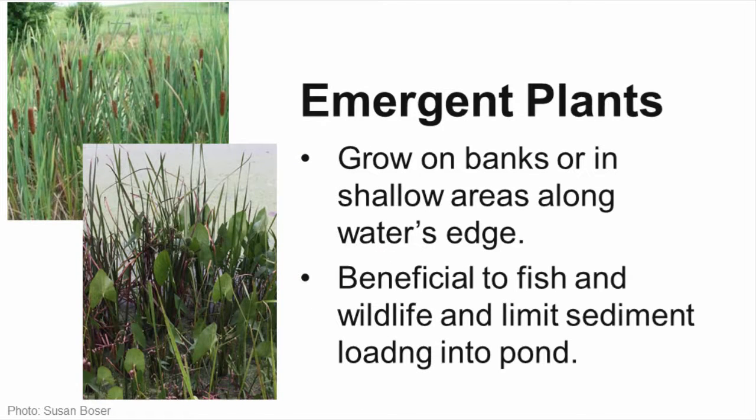Emergent plants are those that can be found on the banks or shallow areas of the pond and grow in the water or right along the water's edge. Cattails, in the top picture, and burr reed below are two very common emergent aquatic plants that both do a good job of helping to control erosion along bank areas and limiting sediment runoff into the pond. Cattails are also able to take up nutrients and metals from the water, acting as a natural water filter.